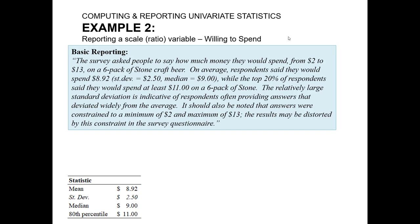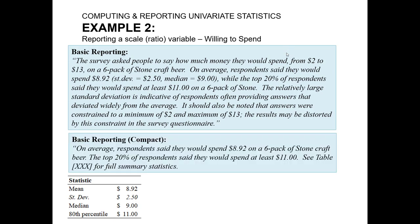But this is a pretty comprehensive report of a simple summary table. A more compact version of this, if we were trying to keep ourselves more concise, could be: on average, respondents said they would spend $8.92 on a six pack of stone craft beer. The top 20% of respondents said they would spend at least $11. See table blank for full summary statistics. Notice here, I'm much more compact with what I'm reporting on. But what we lose here is I don't notice the limitations of the measurement. But I don't mention anything about the standard deviation or dispersion. That might be a limitation because often management should be made aware of that.